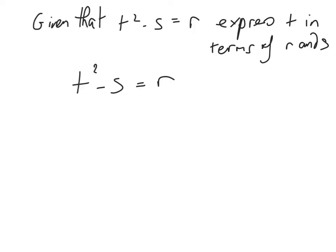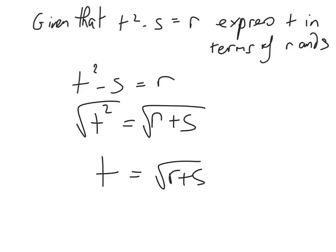So that means basically we have to bring the s over here to make it plus s. Now we can get rid of the square because the t squared is on its own. So all we have to do is square root both sides. And once we've square rooted both sides, we can actually change this to a t because it gets rid of the square. And that's our answer.